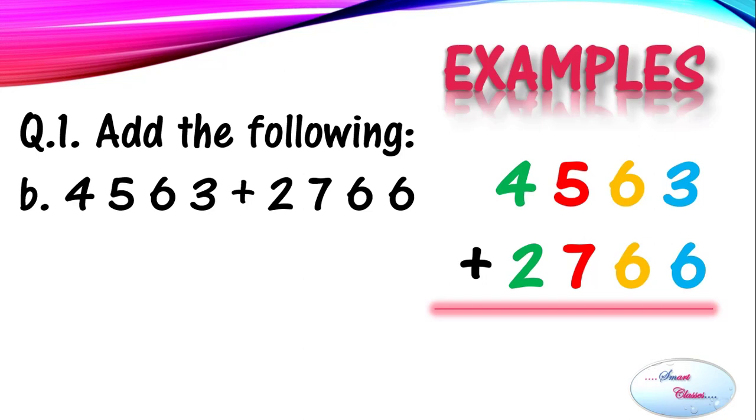After ordering the numbers, we will start adding them. Here first we will add the numbers on the ones position. 3 plus 6 gives us 9, so 9 will be written on the ones position. Moving towards the tens position, 6 plus 6 gives us 12. So here 2 will be written here and 1 will go as a carry over on the hundreds position.